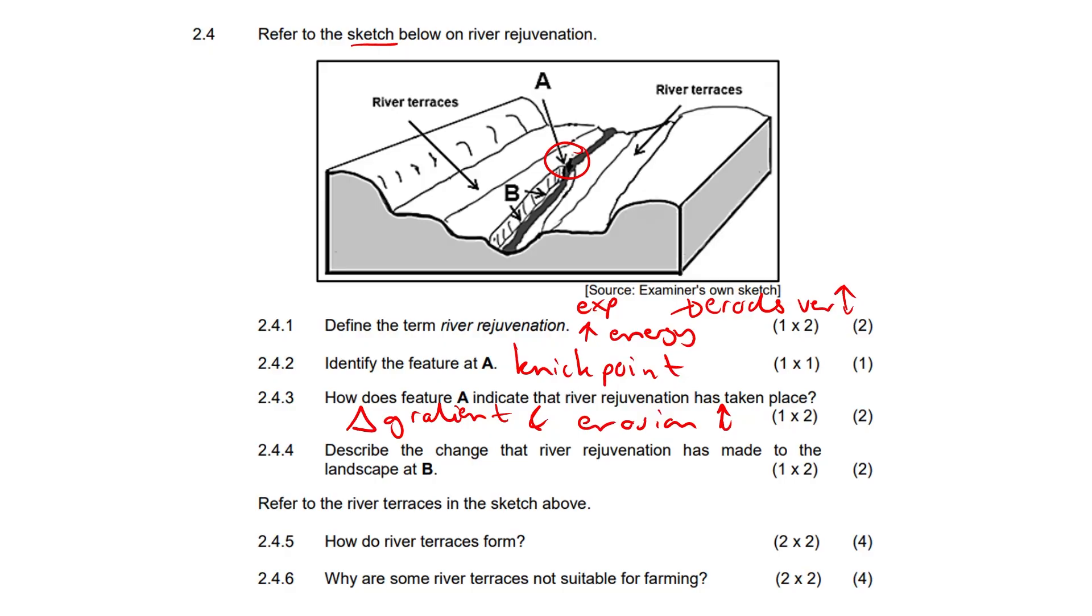2.4.4. Describe the change that river rejuvenation has made to the landscape at B. There it is. It formed a valley in a valley. So like a meta valley, almost. That's cute, eh? Like this is a valley and then there's like a further valley in there.